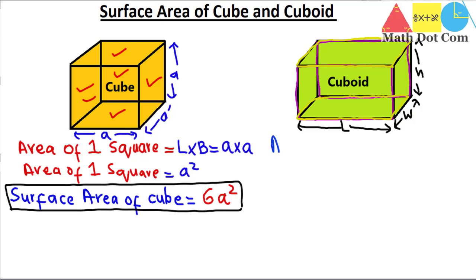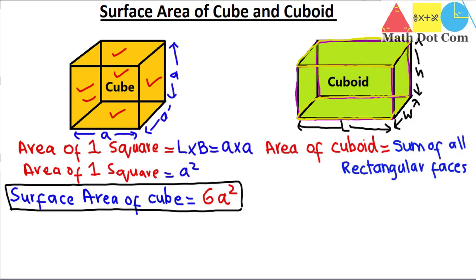The surface area of cuboid — note it is surface area, not just area, there is a difference — equals the sum of all rectangular faces. There are six rectangular faces in the cuboid.